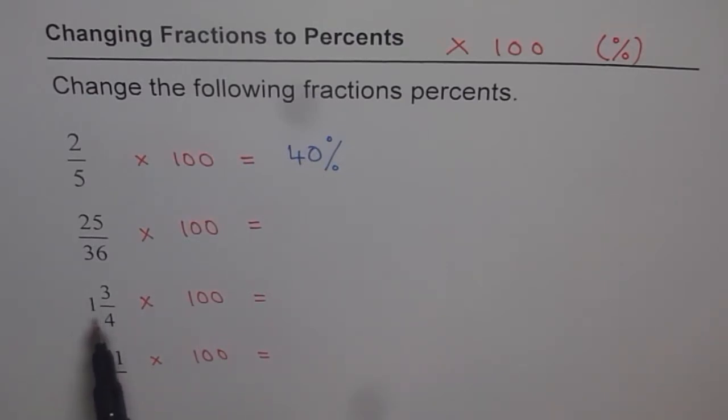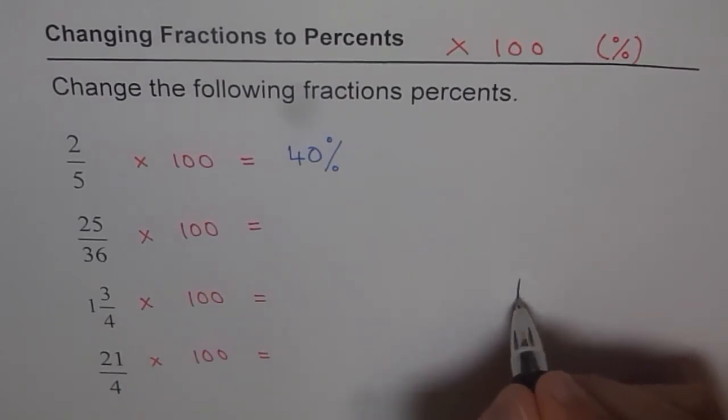Now here, 1 and 3 over 4. You may at times, if your calculator does not permit, change that to an improper fraction. That may be required, and I hope you remember how to do this. So 1 and 3 by 4, let me do it on the side.